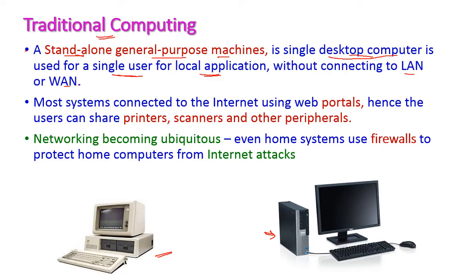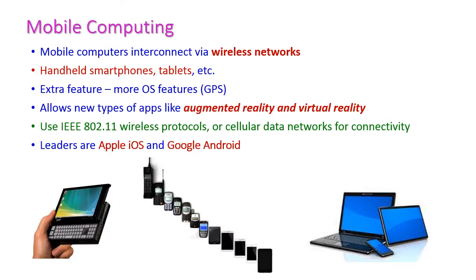Most systems are connected to the internet by using a web portal, so the single user can share printers, scanners, and other peripherals for their applications. The network is becoming ubiquitous — meaning globally utilized — hence even home systems can use firewalls to protect home computers from internet attackers. This is traditional computing.